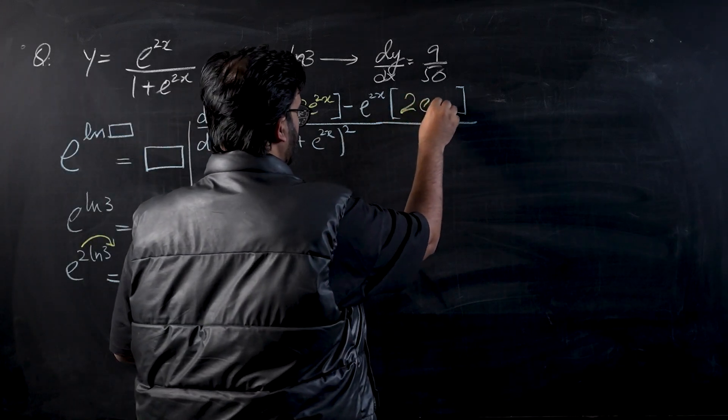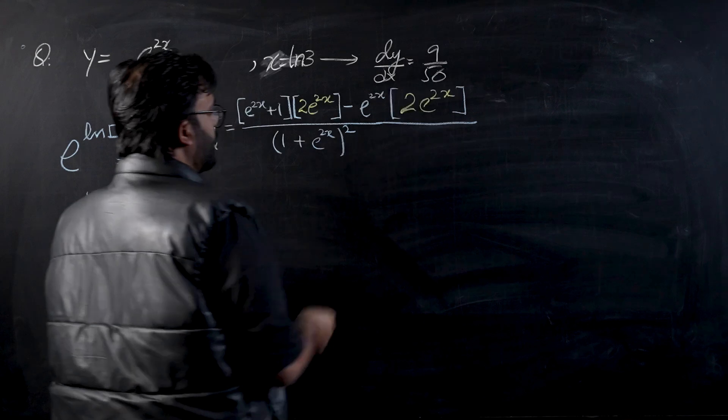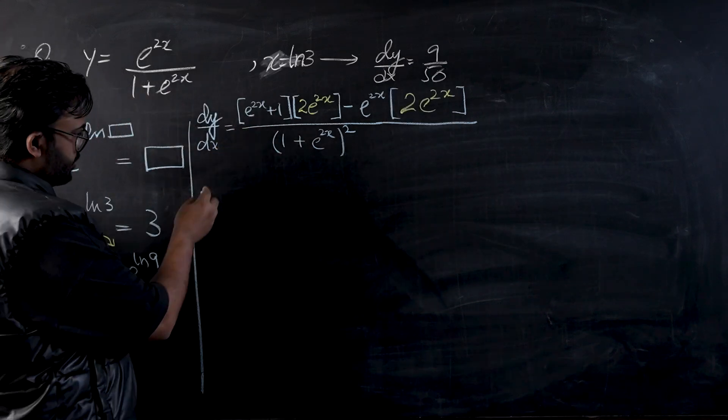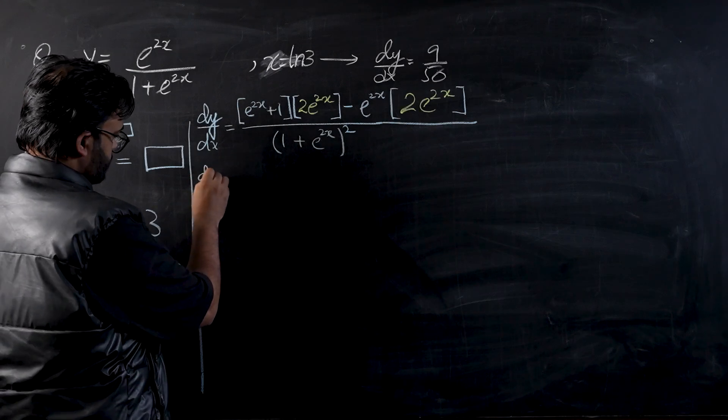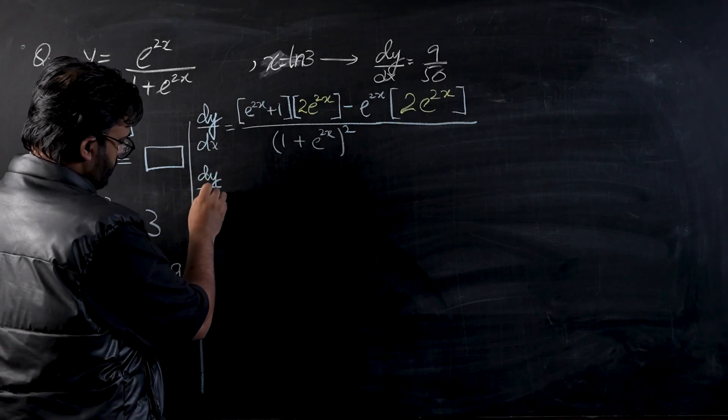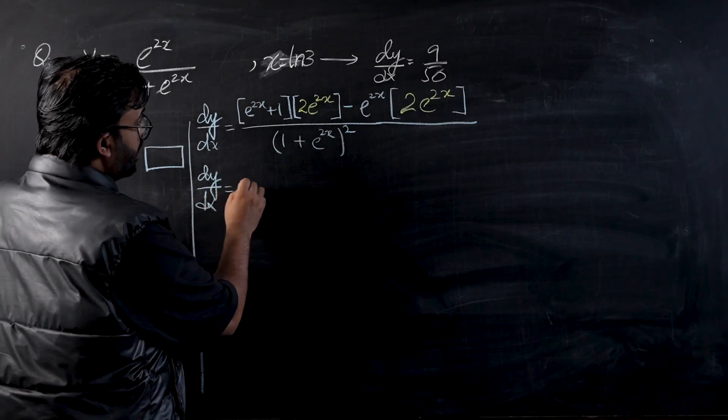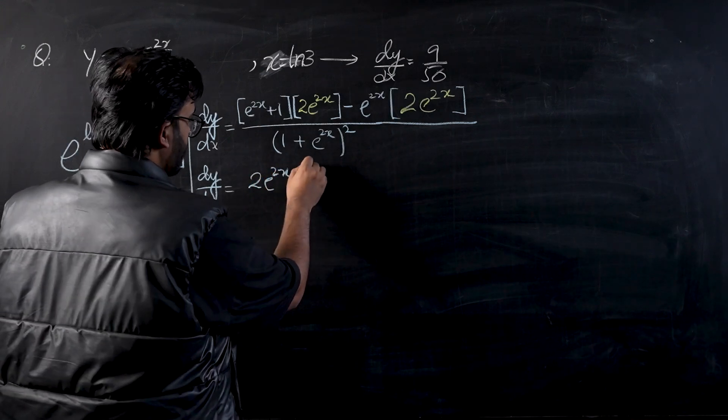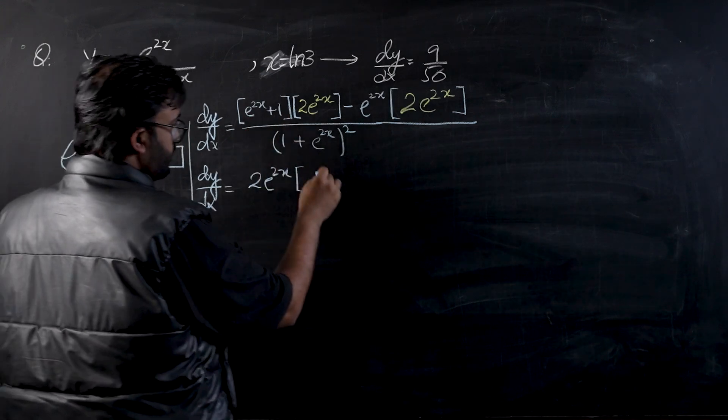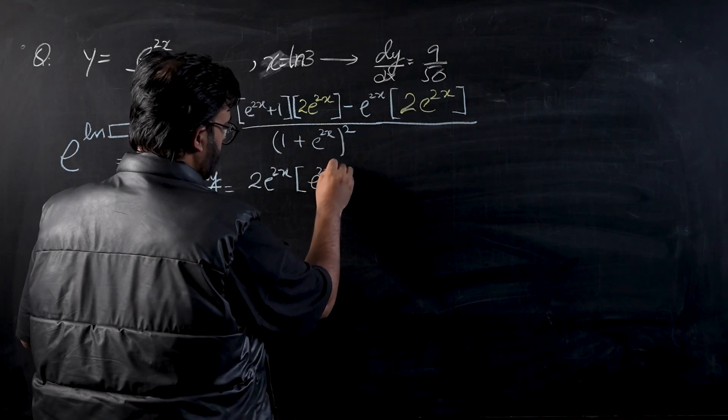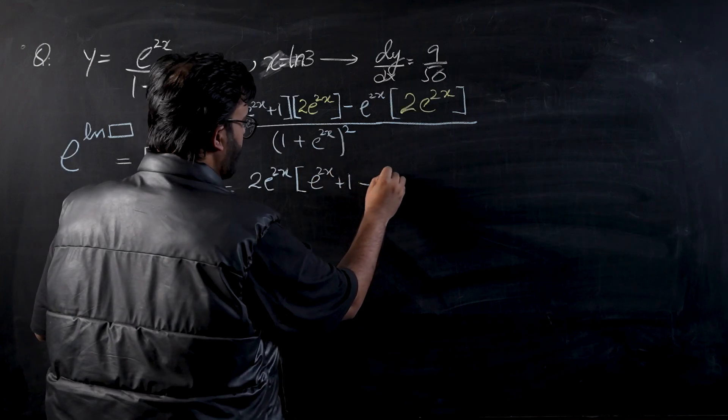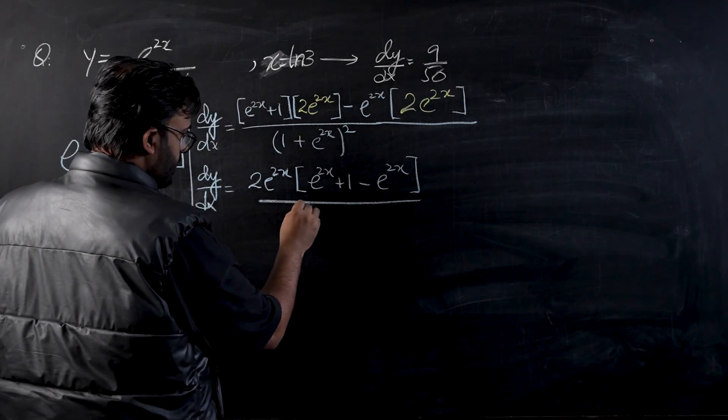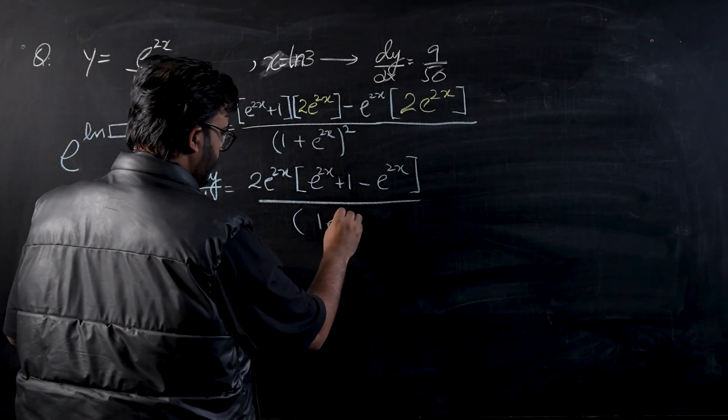Minus e raised to power 2x, so this would be 1 would go to zero and 2 e raised to power 2x would be differentiation over here as well. Now I'm going to take a common in the numerator, so dy by dx will become 2 e raised to power 2x taken common. You will have e raised to power 2x plus 1 minus e raised to power 2x divided by 1 plus e raised to power 2x.